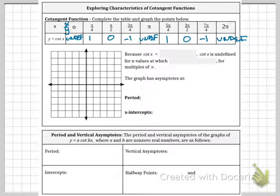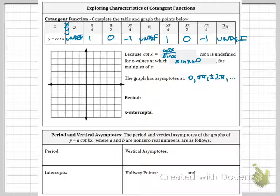So because cotangent is cosine of x over sine of x, cotangent of x is undefined for x values at which sine of x equals 0. And that is true for any multiples of π. So the graph has asymptotes at 0, plus or minus π, plus or minus 2π, and so forth.